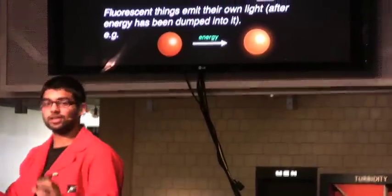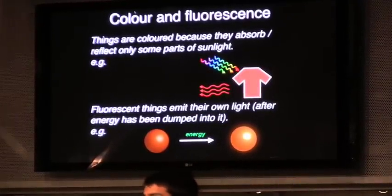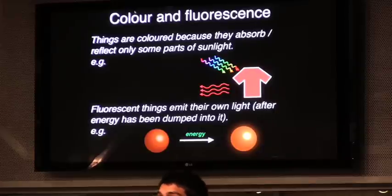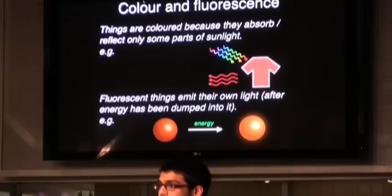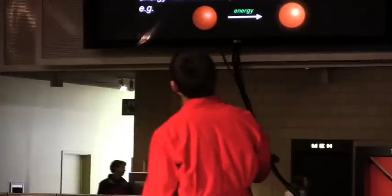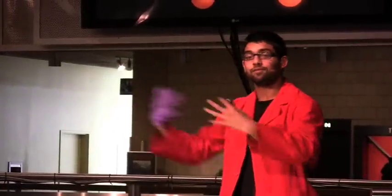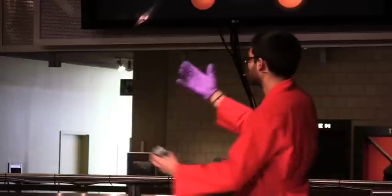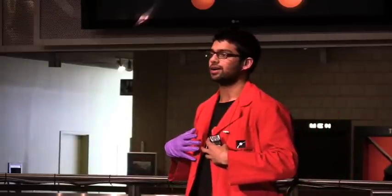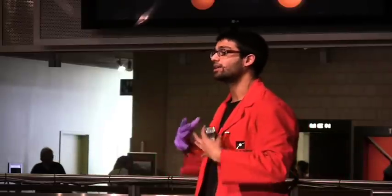One thing we should be very clear about is that there is a difference between the natural color of things and the actual fluorescence, or the light that they emit. One really easy way to look at this is that things are colored because they only absorb and reflect certain parts of the light. For example, I'm wearing a red coat right now, and when white light from all around us hits my coat, only the red portions are entering your eyes. That is why my coat looks red.